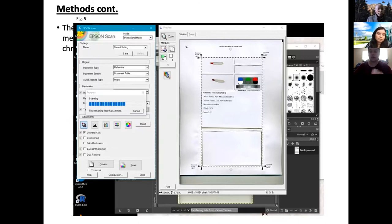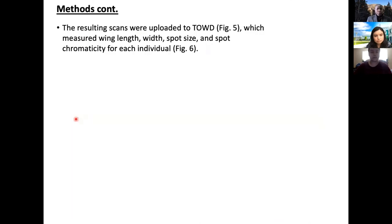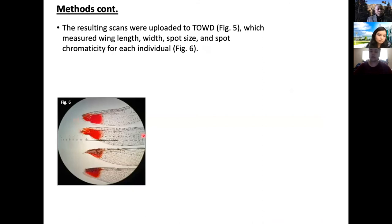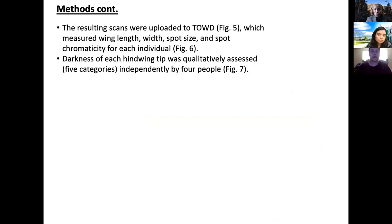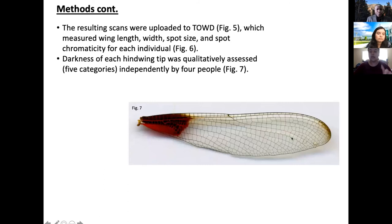Each specimen note card shows where it was found, the day it was found, and they're categorized by color and number to keep them in order. In figure six, a close-up through the microscope shows the coloration of the hue. One thing to mention: we are still waiting on results for the chromaticity and saturation of the wing spot size. The darkness of the wingtip was qualitatively assessed between four people on a scale of extremely light, light, medium, dark, and extremely dark. The wingtip is at the very right of the wing where you see that coloration. I color-coded the outer length and width to show the apex ratio, the outer length and width, and the inner length and width.